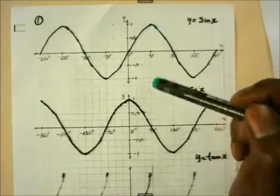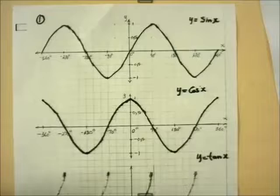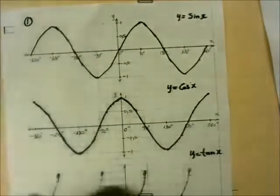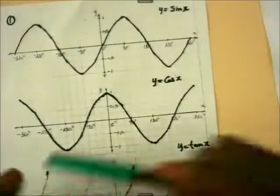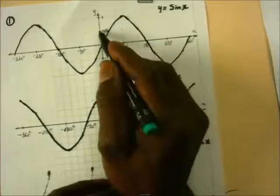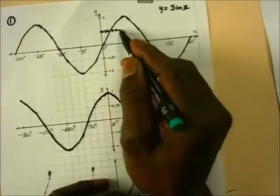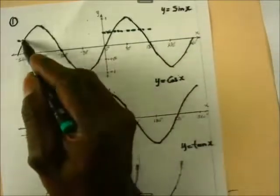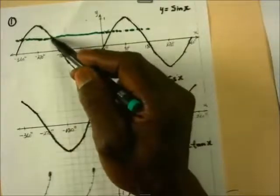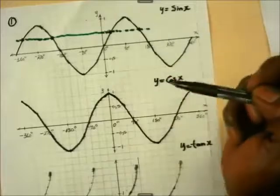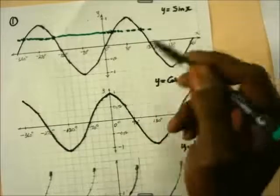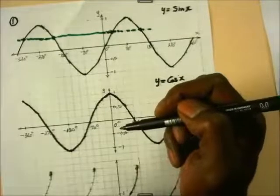We need the solutions. If we need any number of solutions, we must make use of the general solutions. We are going to have one question here. Suppose we want to find the solution for, we make y to be 0.5. If we make y to be 0.5, then it means we are going to draw a horizontal line here.